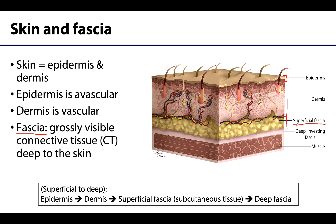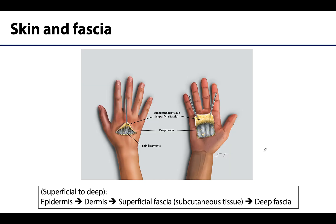Deep to the superficial fascia will be the deep fascia, which surrounds a muscle here. It is organized into multiple layers surrounding muscle and viscera, which means organs, and this is where we'll spend the majority of our time in this video. The superficial fascia will have a yellowish-brownish tinge and less organized composition, whereas the deep fascia is typically more organized, appearing silver or whitish, or almost translucent in thinner areas — which is what makes muscles or viscera appear shiny.